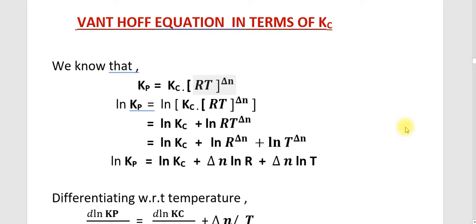In the last video, we found out the temperature dependence of the equilibrium constant and reached a new equation — the Van't Hoff equation. After that, we found the integrated Van't Hoff equation. In this video, we are finding out the Van't Hoff equation in terms of Kc, or finding out the relation between the Van't Hoff equation and Kc.